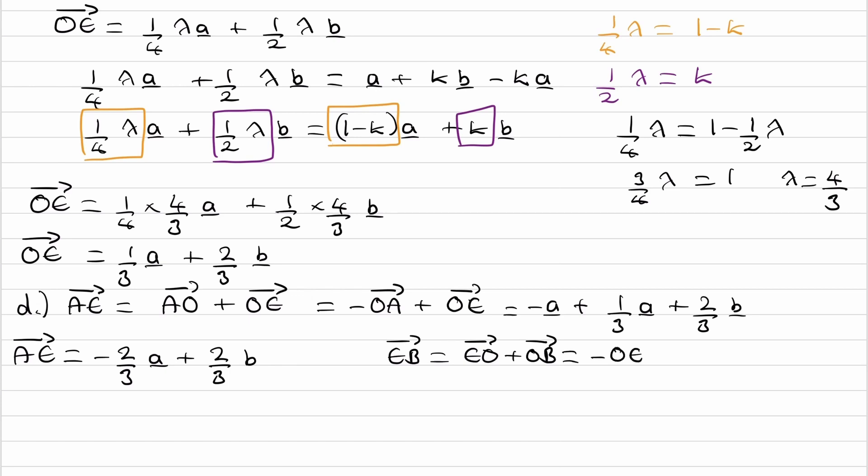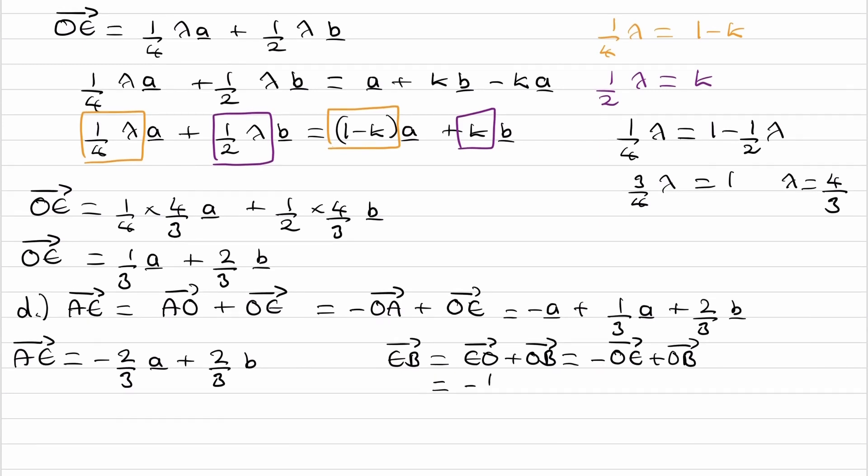EO is the negative of OE. So this will then be minus 1 third A minus 2 thirds B. So that there is minus OE. Plus OB, which is just B. And simplify this to get minus 1 third A plus 1 third B.